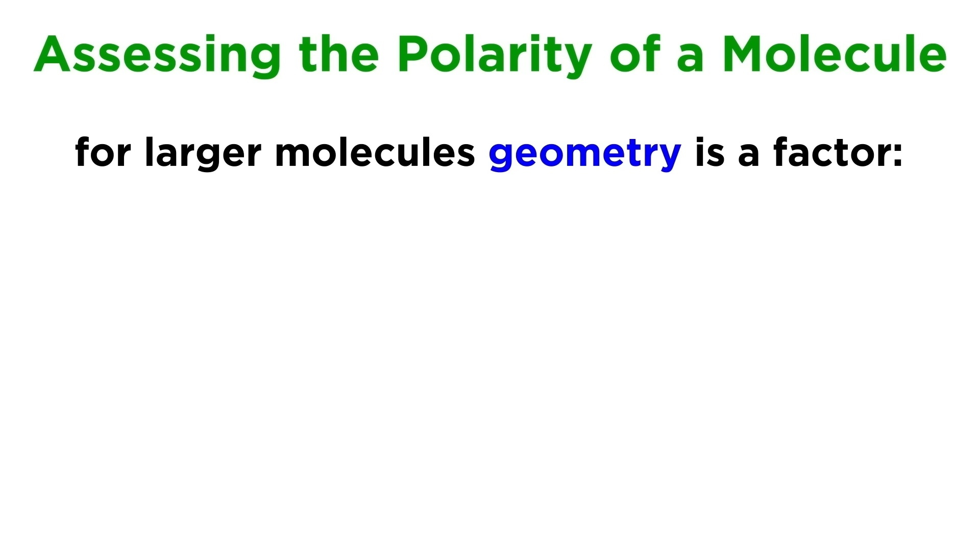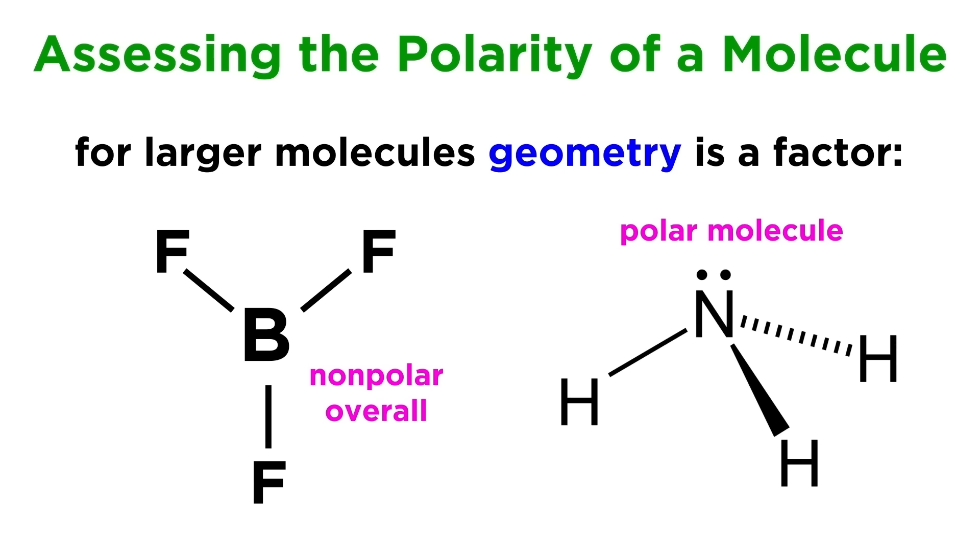Things can cancel out in more than two directions as well. BF3 is nonpolar while NH3 is polar, due to the difference in geometry, trigonal planar versus trigonal pyramidal, meaning the NH bonds all point somewhat in one direction.